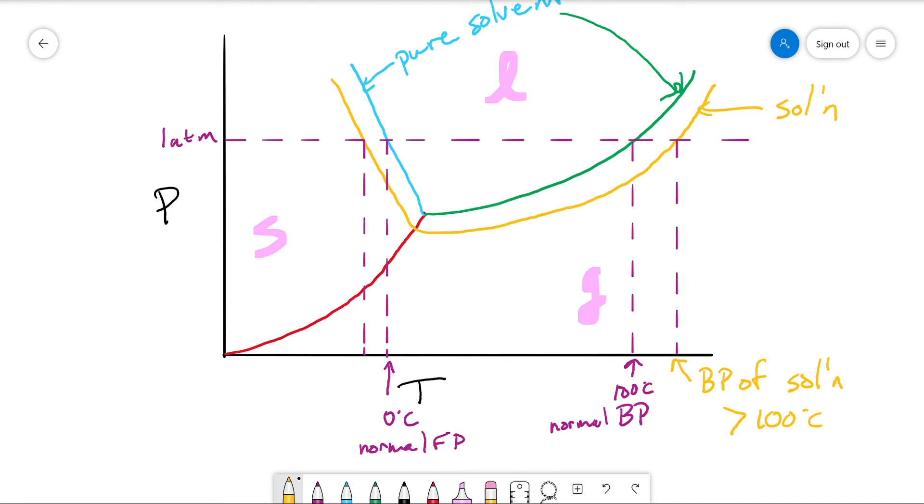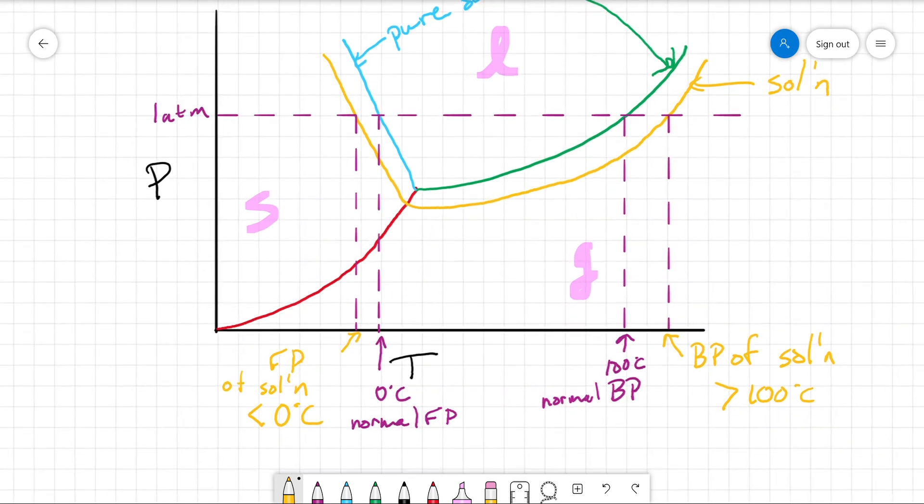I'll just say it's greater than 100 degrees Celsius, again that only goes for water. And here's our freezing point of the solution, and it is less than zero degrees Celsius. So because that vapor pressure is different, we get a broader range for the liquid.